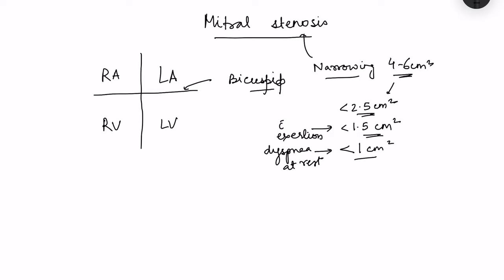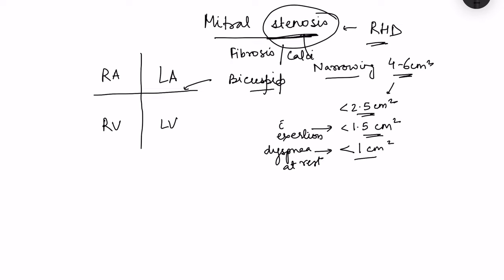Mitral stenosis develops mostly due to rheumatic heart disease — rheumatic fever which develops in childhood in school-going children. It affects the heart, joints, and skin. However, healing of the heart is not complete even when rheumatic fever subsides with medicines, and over a period of 15–20 years this can develop into mitral stenosis. Chronic inflammation ultimately leads to fibrosis and even calcification of the valve, which narrows the mitral orifice.